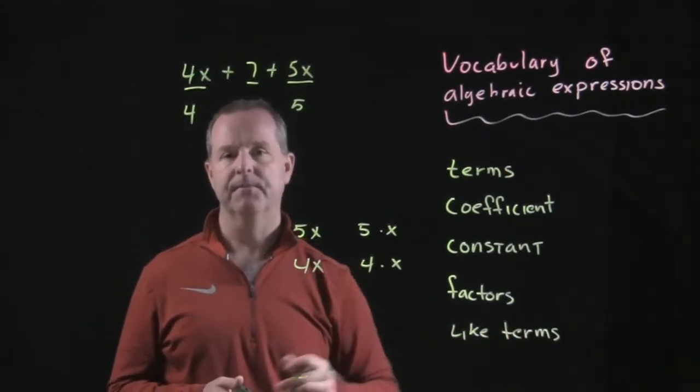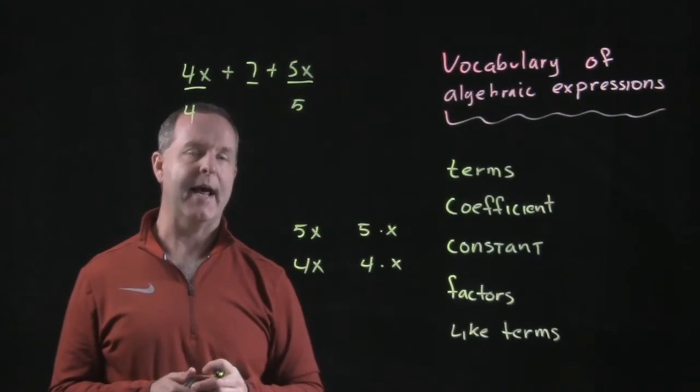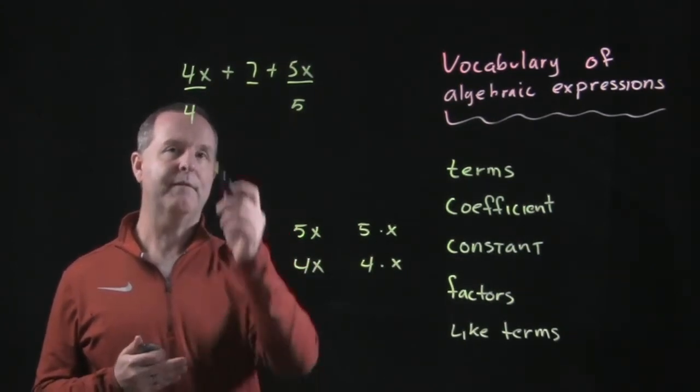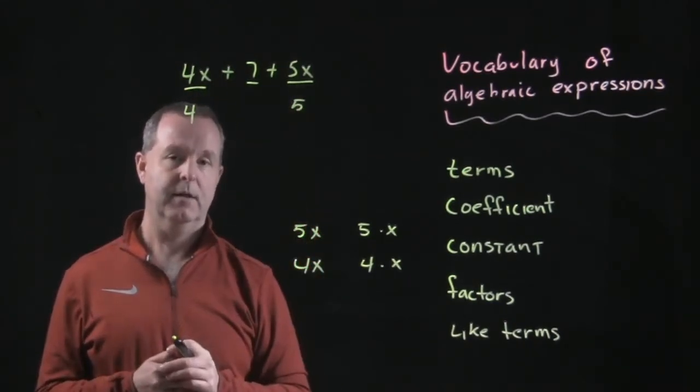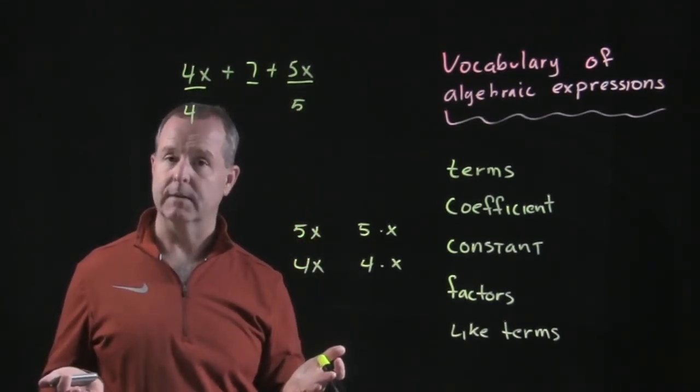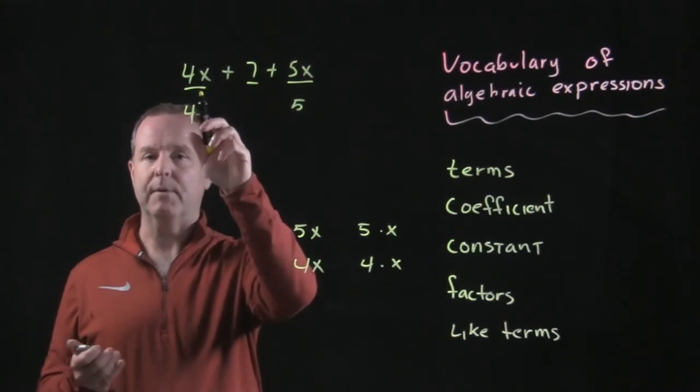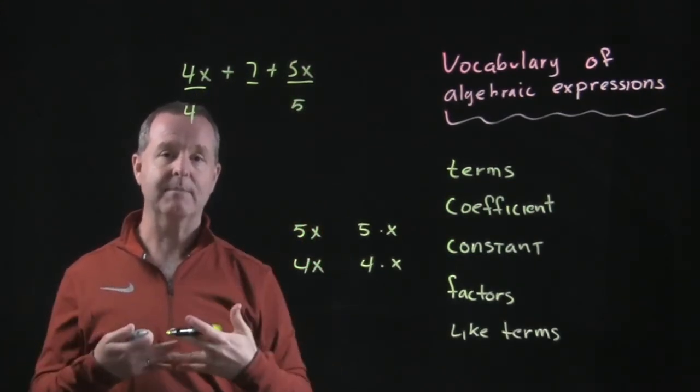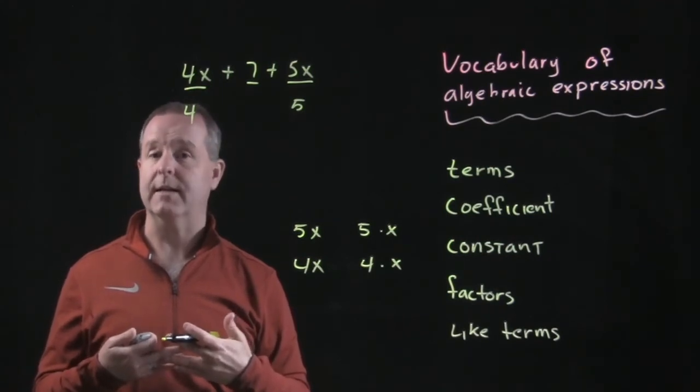And like terms. Like terms are going to be identified as terms that are alike. So I have 4x's and I have 5x's. Those are like terms. In the same way that I might have 4 apples and 5 apples, I'm able to combine them together because they are like terms.